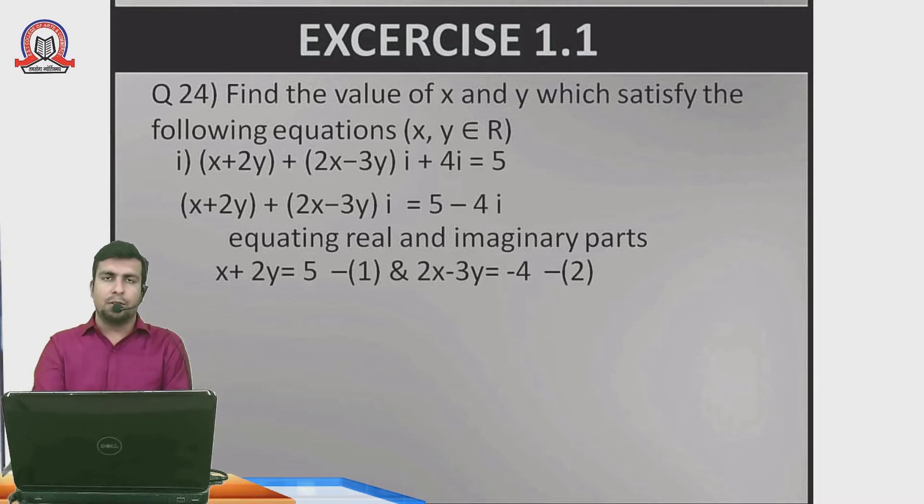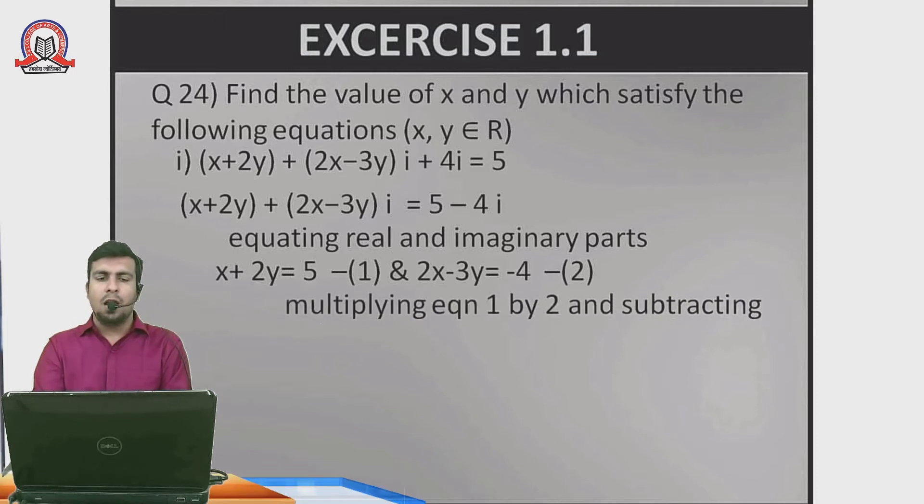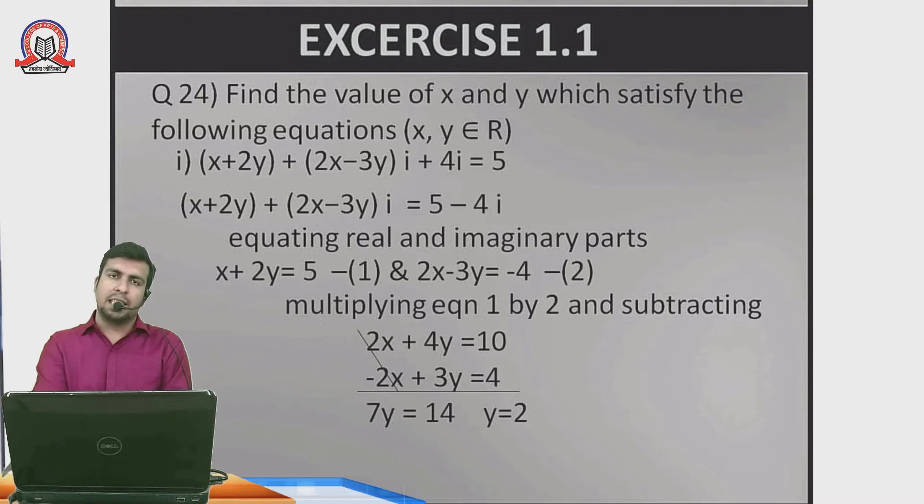Now I have two equations to solve for x and y simultaneously. I can see x can be cancelled. Multiply equation 1 by 2, giving 2x plus 4y equals 10. Subtract equation 2: 2x minus 3y equals minus 4. The 2x terms cancel, leaving 7y equals 14, so y equals 2. To find x, substitute y equals 2 into equation 1.